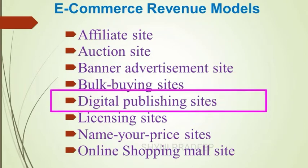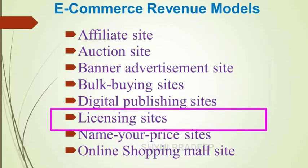Next are digital publishing sites, which effectively host e-books or magazines on the web and make profits through advertising, selling, and so on — for example, WordPress. Next are licensing sites, which allow other websites to make use of their software. For example, search engines allow a visitor to search within the website more easily — such as Google.